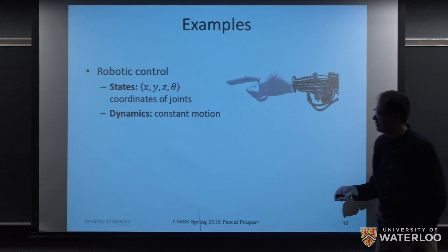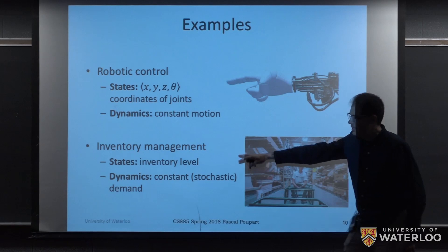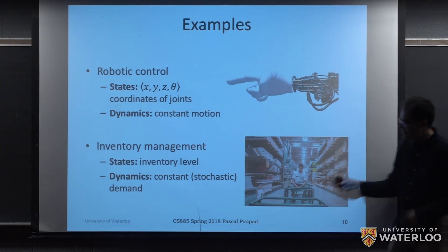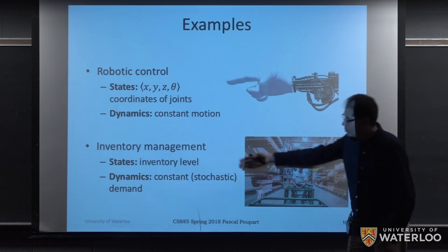As another example, we could consider an inventory management problem, where the state is defined by the inventory level and we've got some dynamics corresponding to how the inventory level changes over time. The demand for different widgets is going to be assumed to be constant but stochastic. This might not always hold, but it's an assumption that we're making.